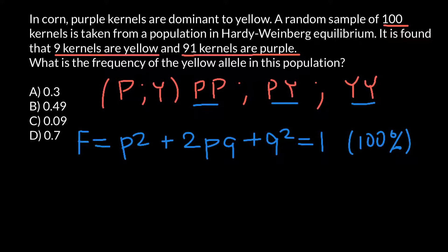Purple phenotype would be these two genotypes. For P squared we have genotype PP, and for 2PQ we have genotype PY. So basically, in our formula P equals P and Q equals Y.